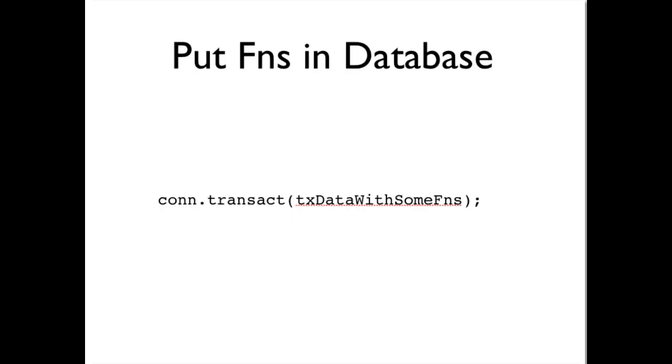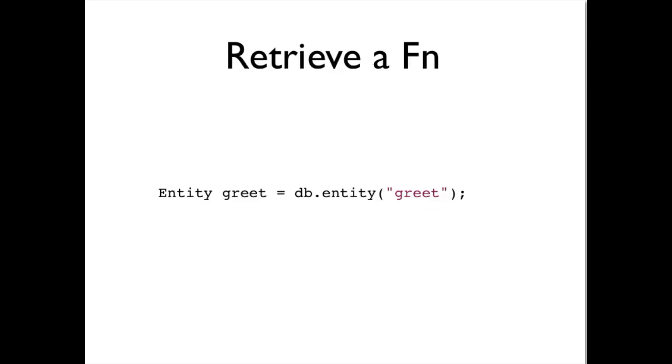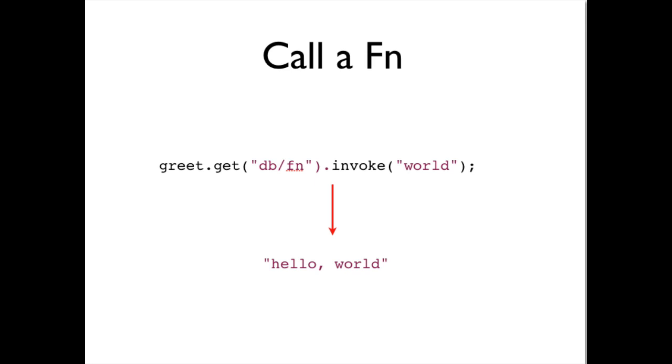Once you have transaction data with some database functions, you can put those functions into the database by simply calling transact. You can retrieve by simply calling entity, and then you can call the function by looking up the dbfun attribute and calling invoke.